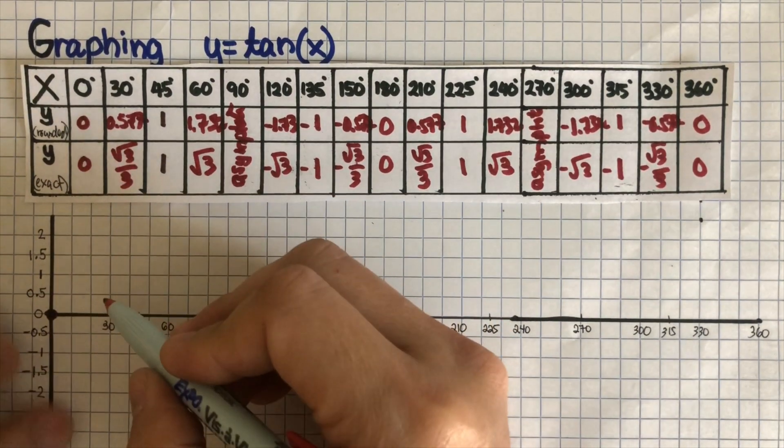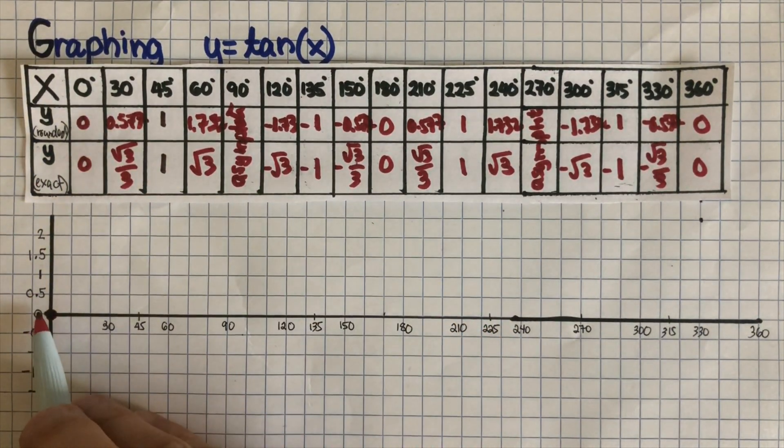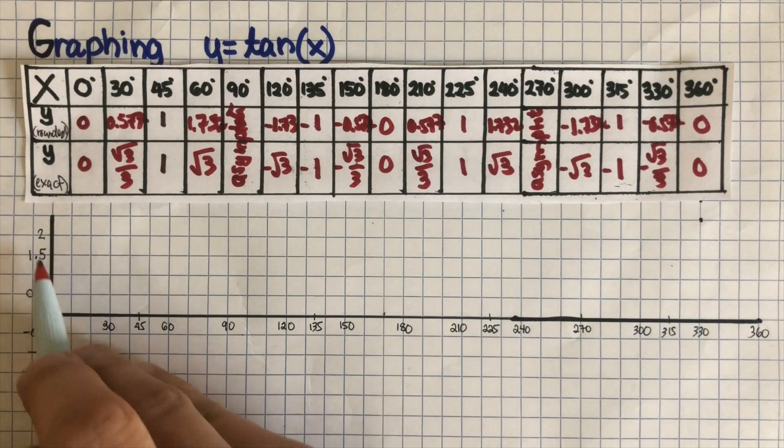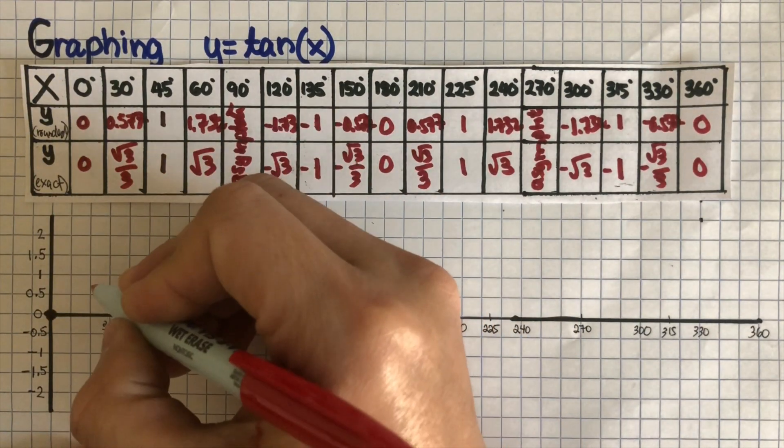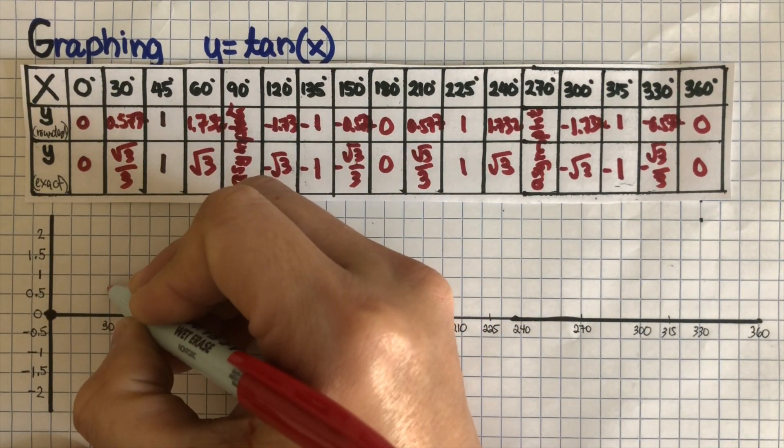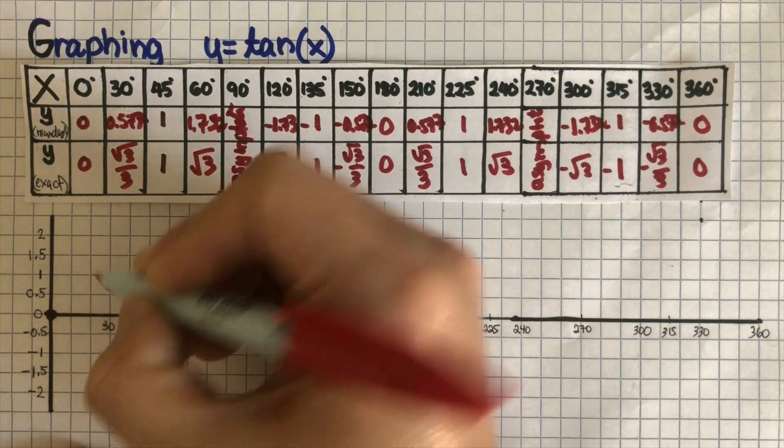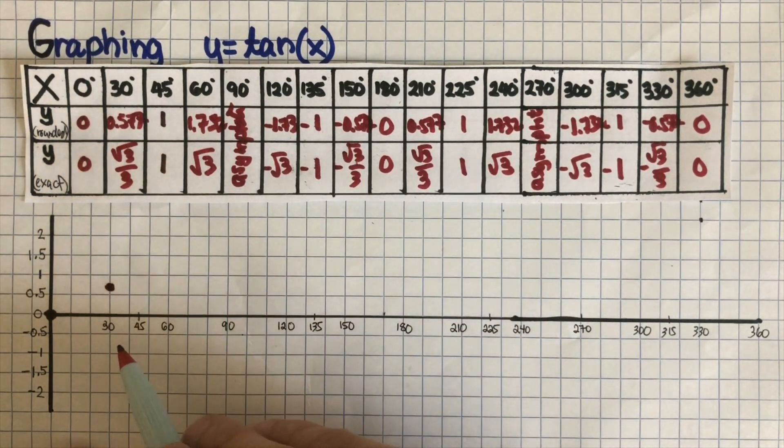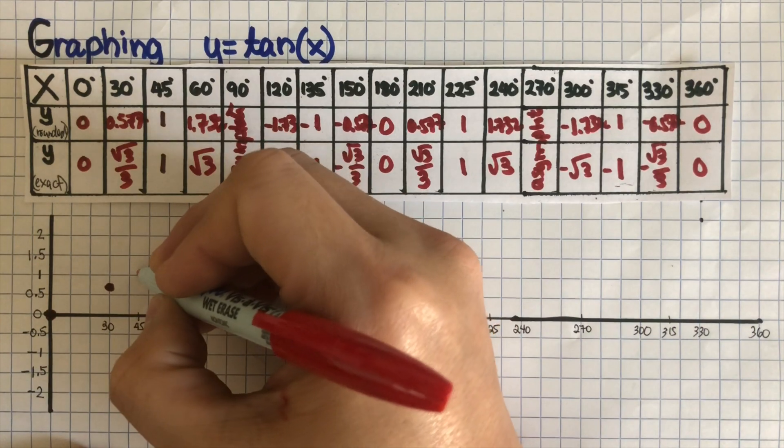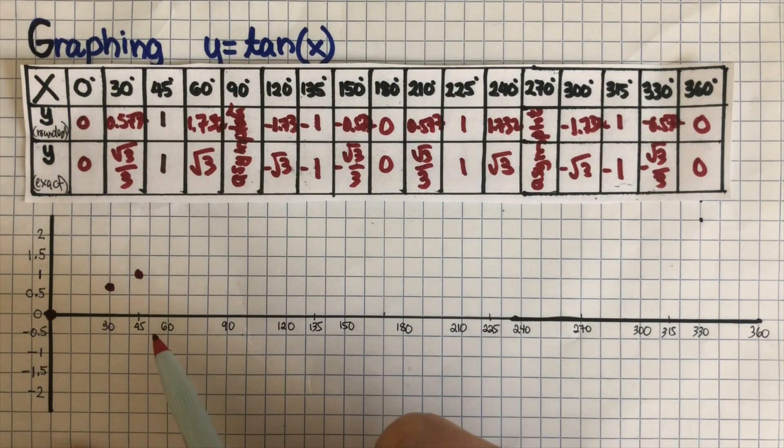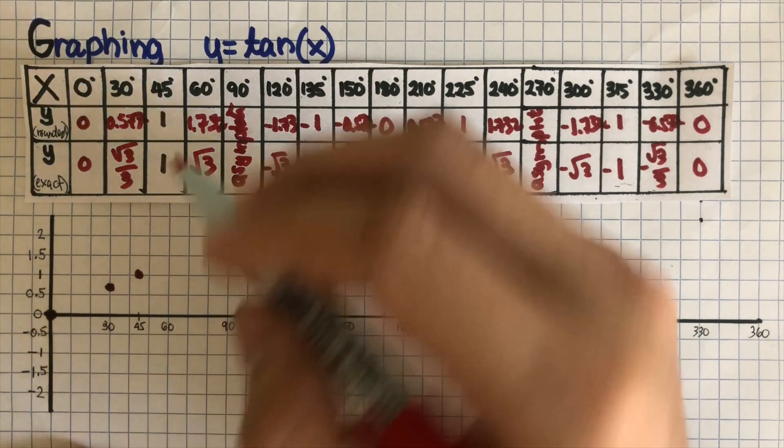30 is 0.57, by the way this goes by 0.5, so 0.57 for 30 should be somewhere around here. And then 45 is at 1, so it's right here. And then 60 is 1.73.